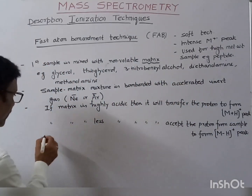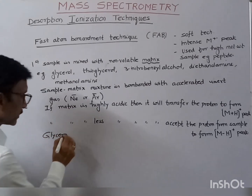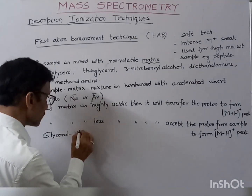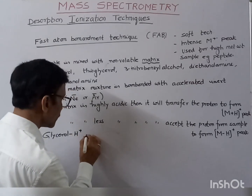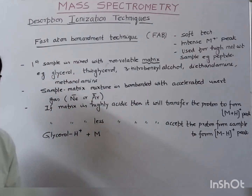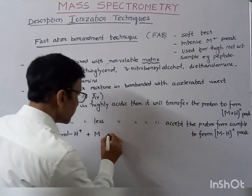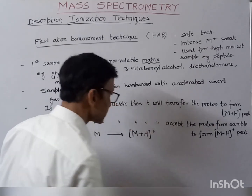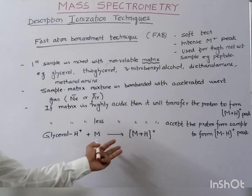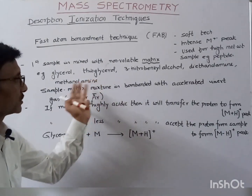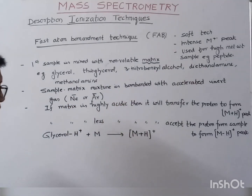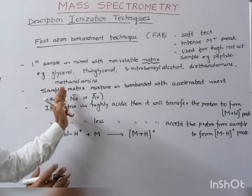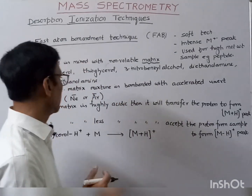For example, if we have glycerol — glycerol being the acidic one — it can transfer the proton after interacting with the sample, and then it can transfer the proton to form the M plus H peak, that is the M plus 1 peak, which will appear in this case. This glycerol is at the matrix phase and it can be removed. So the sample-matrix mixture is bombarded with the accelerated inert gas.